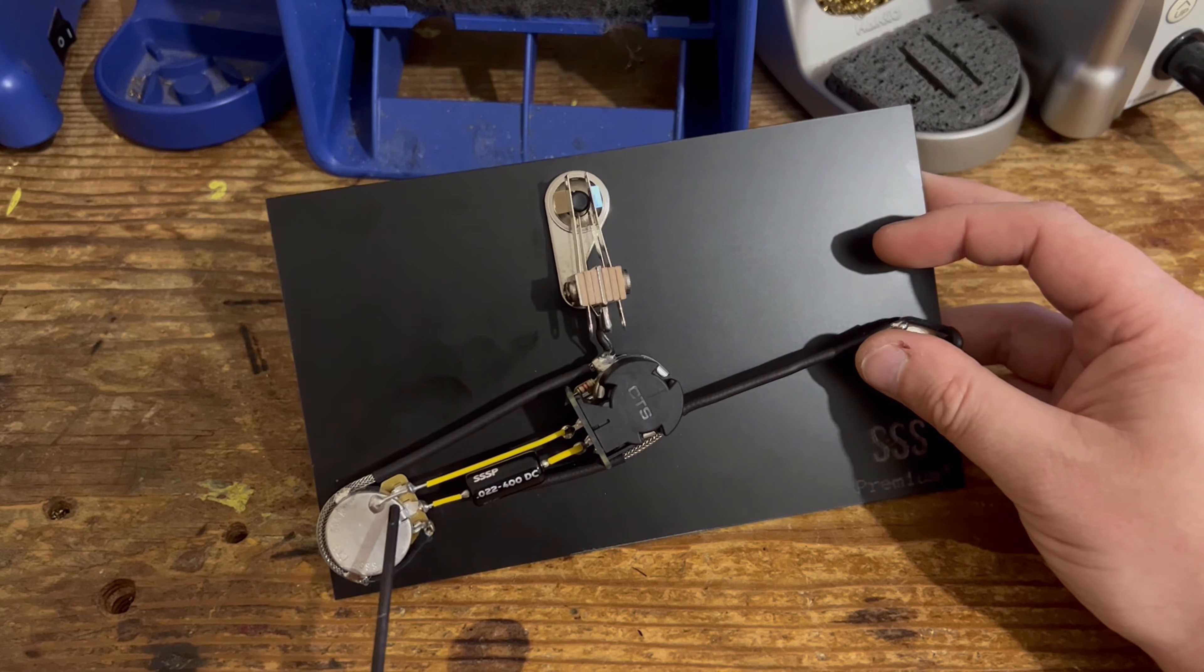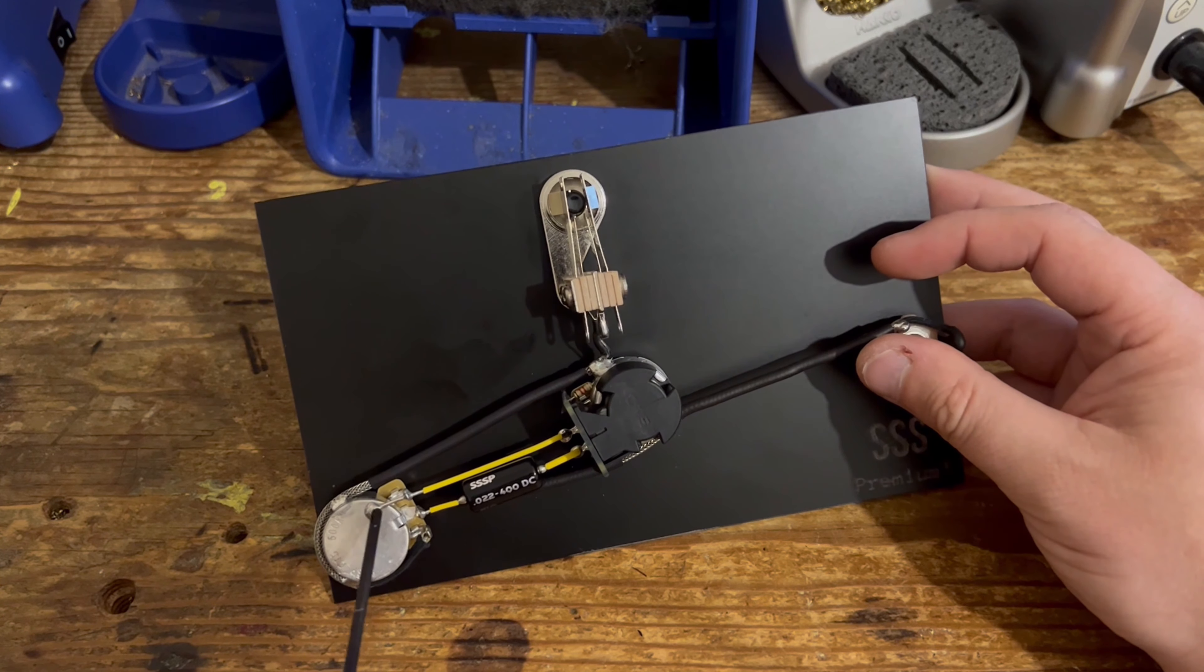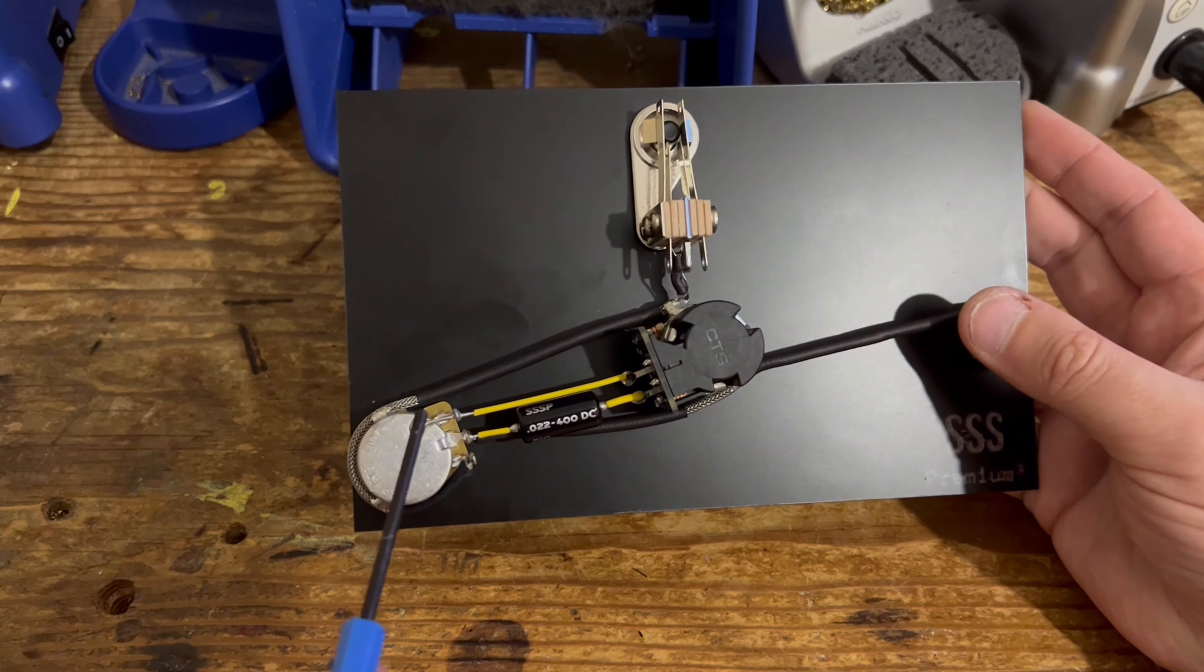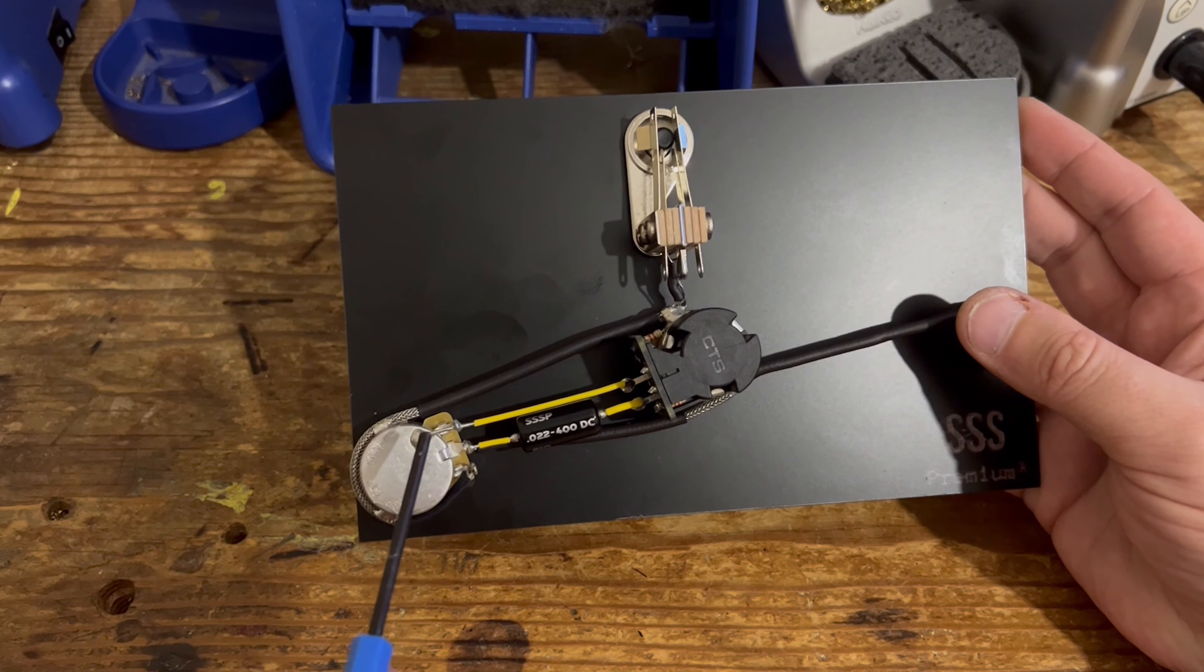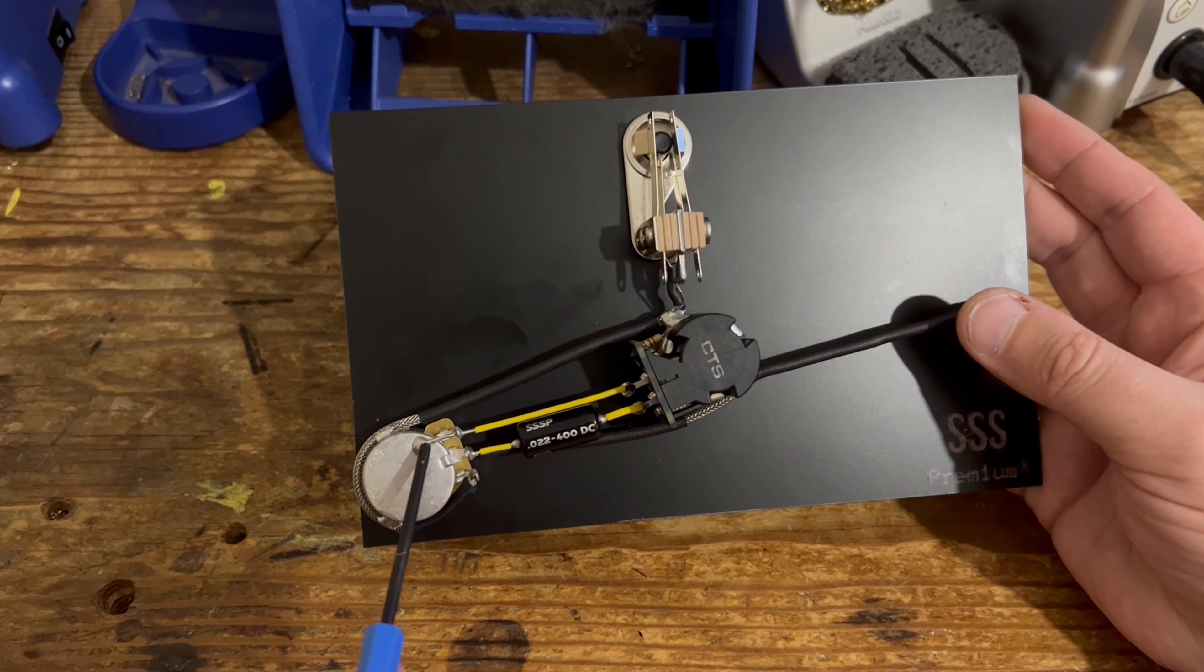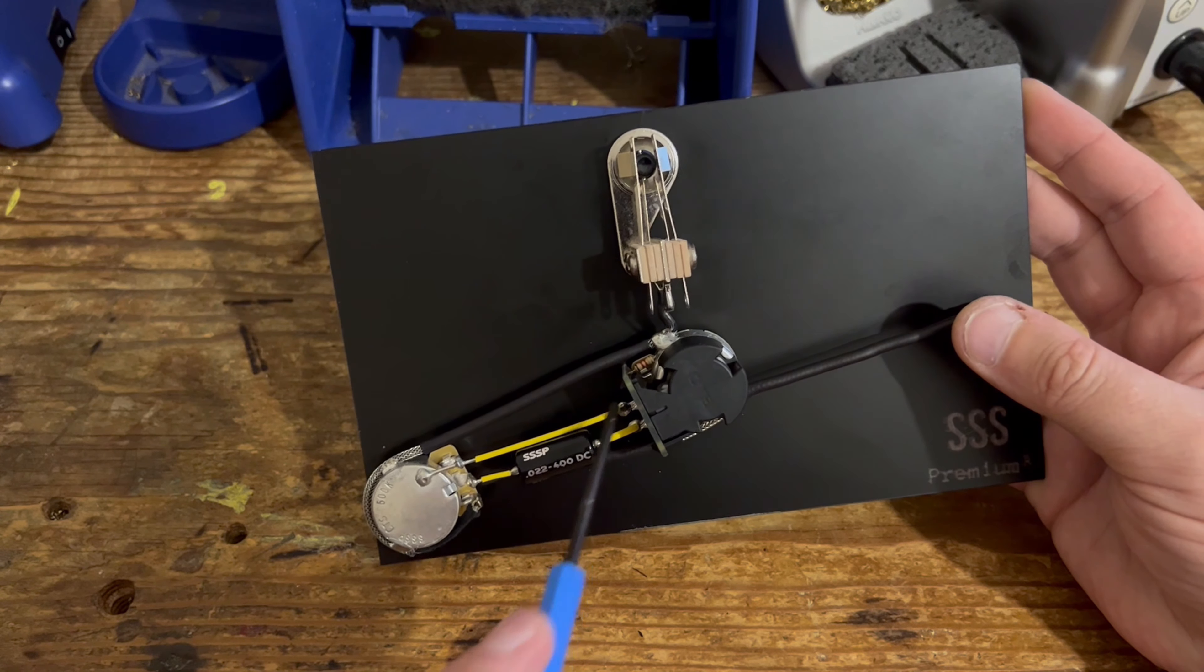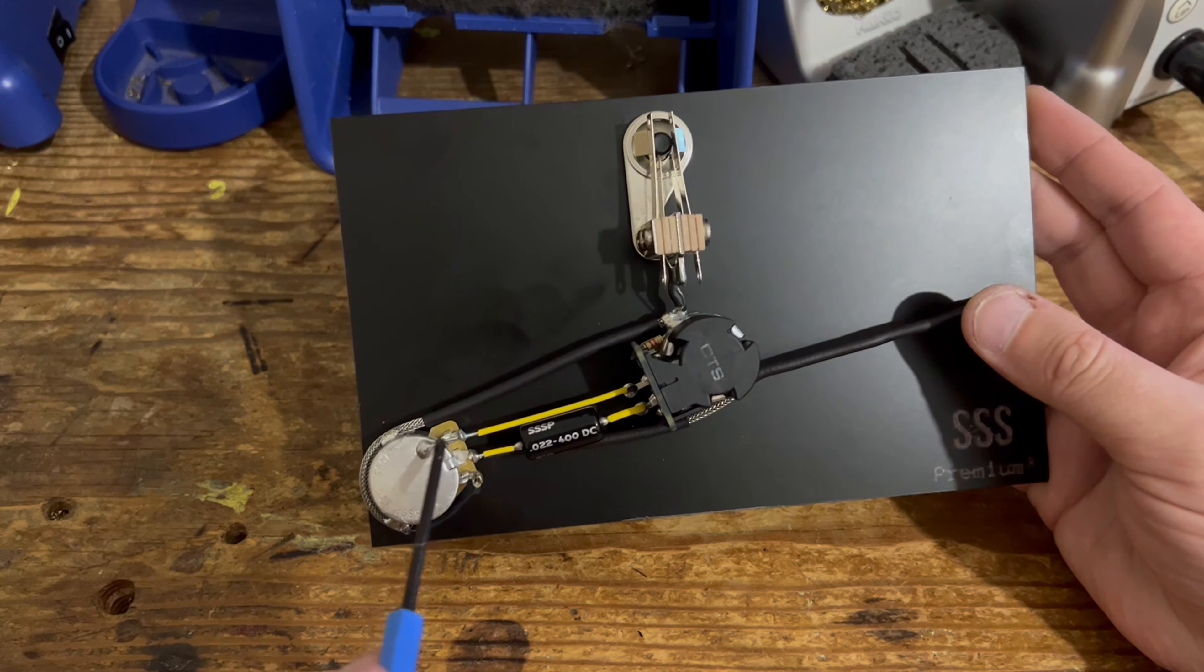I've grounded the lugs of the volume and the tone control using tinned copper here. So as you can see, rather than bending the lugs back and soldering into place, I've used a length of tinned copper connecting them all the way together. So this is now connected to the ground via this connection here.